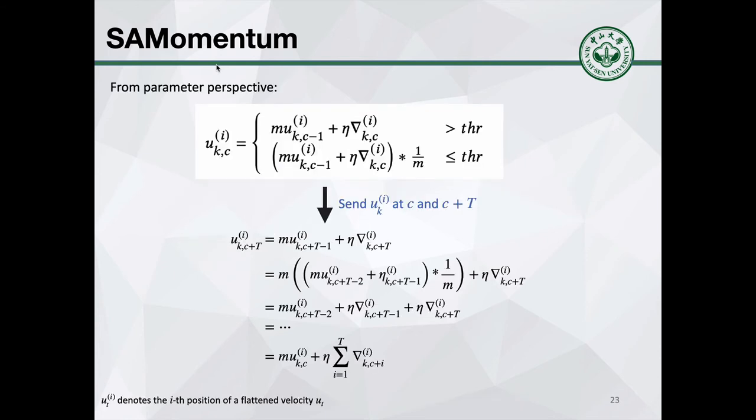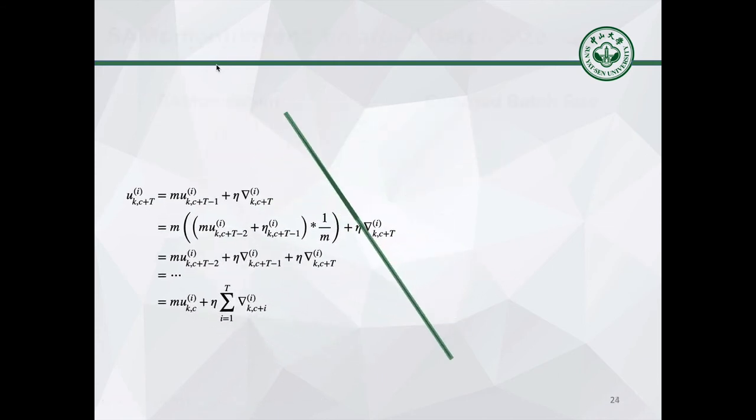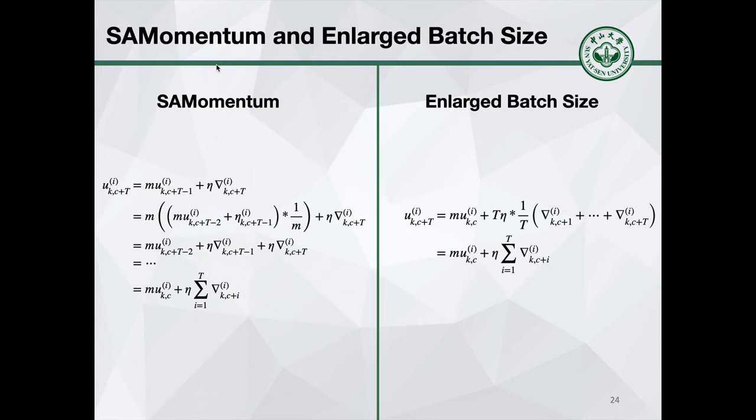From a batch size perspective, if we set gradients at time t and time t plus capital T, a simple derivation reveals that momentum can be viewed as an accumulation of several batches. The underlying idea is sparse-aware momentum adaptively enlarges the batch size for every single parameter. In other words, we turn the sparsification into the magnification of batch size. From the parameter perspective, in dense training, each parameter of the local model has a consistent and fixed update interval and batch size.